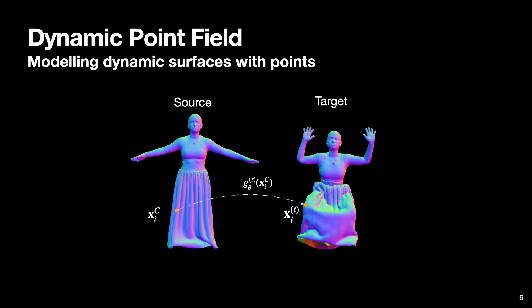Inspired by the latest works on deformation networks, we model surface dynamics with a compact neural net that maps every point and its associated feature in a canonical cloud to a new location.